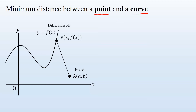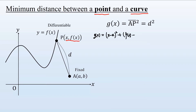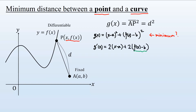We denote the coordinates of point P as (x, f(x)). Let g(x) be the square of the distance between points A and P. Then g(x) is given as (x minus a) squared plus (f(x) minus b) squared. To minimize g(x), we take its derivative: g'(x) equals 2(x minus a) plus 2(f(x) minus b) times f'(x).